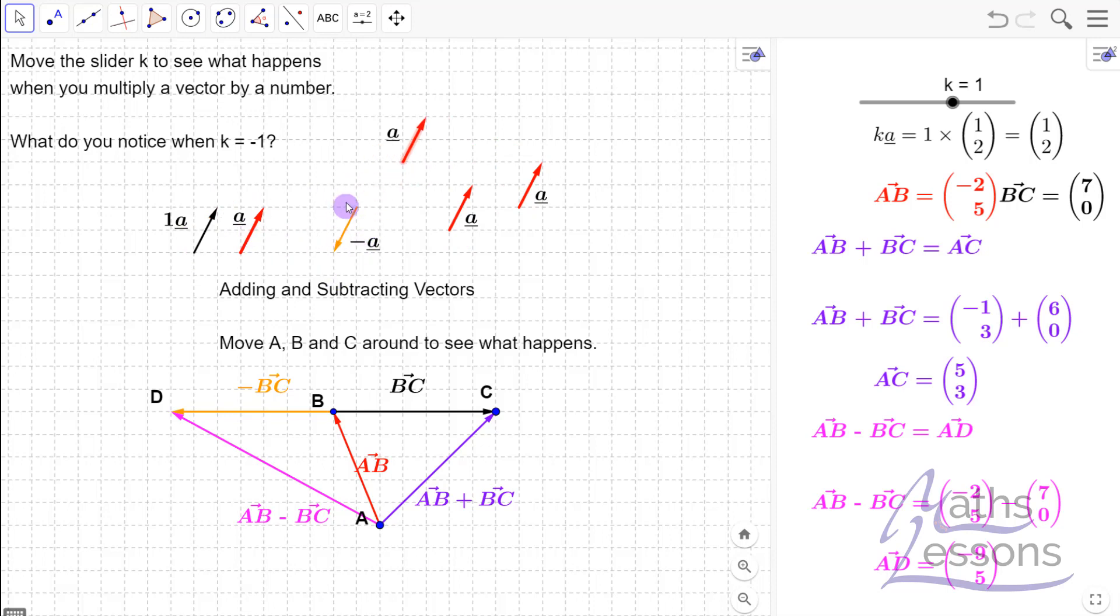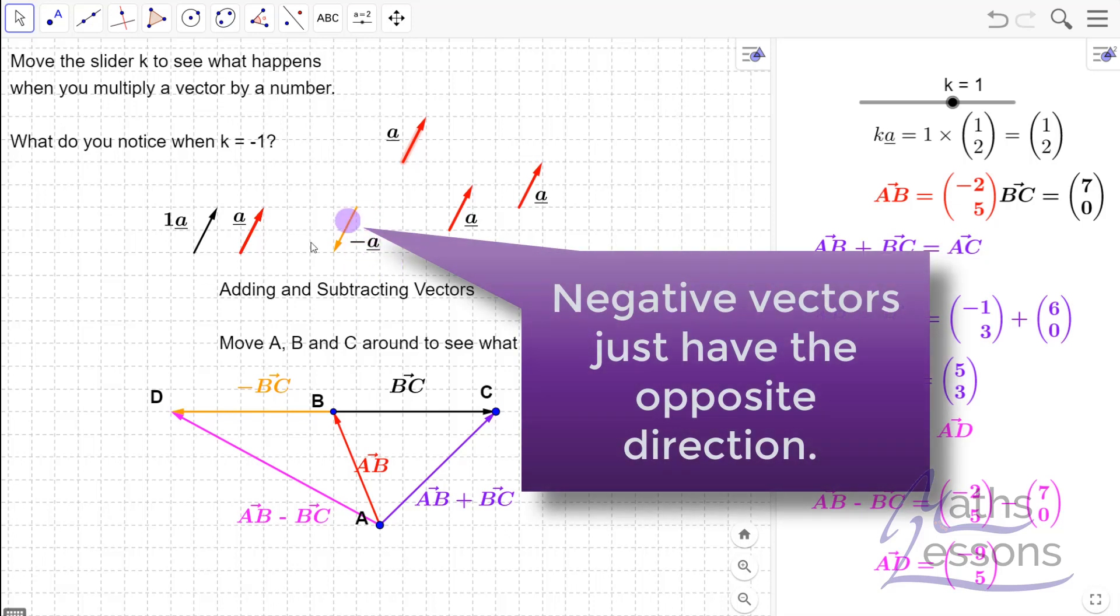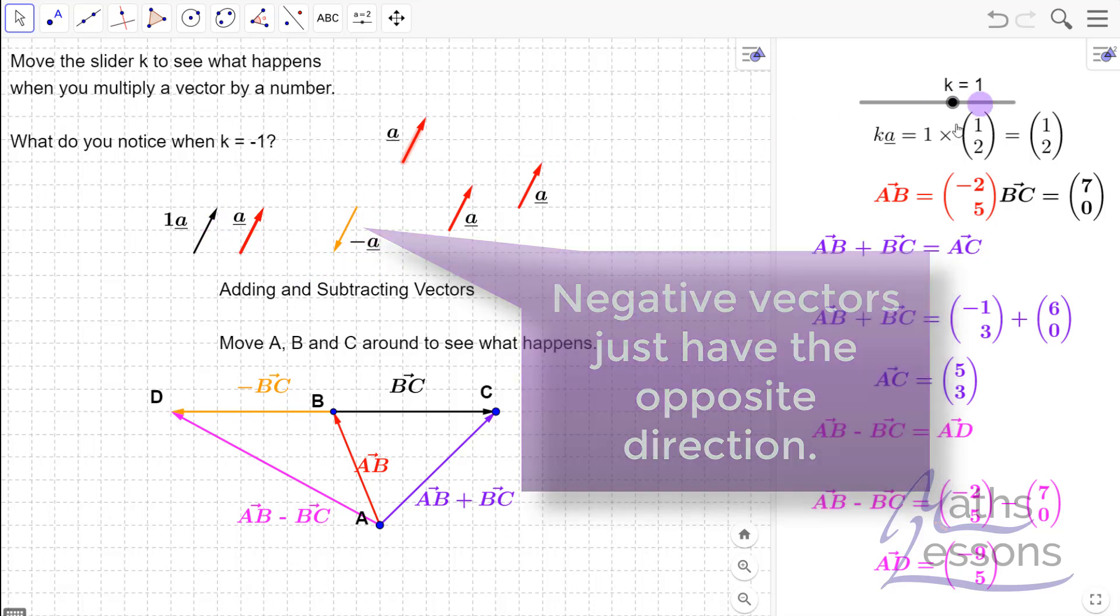What we can see here, we've got a vector in the opposite direction—it's minus A. So if you have a vector exactly the same length but the opposite direction, then we have the negative vector, minus A.